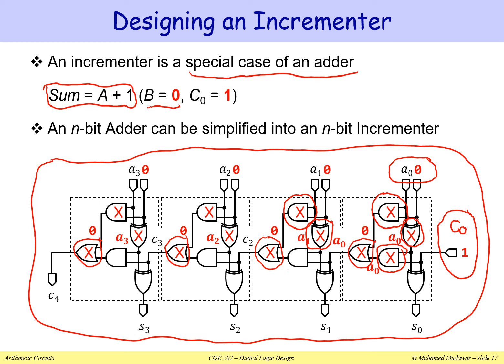Finally, let us look at this XOR gate that produces the output S0. This XOR gate is going to XOR A0 with one. When you XOR A0 with one, you get the complement of A0, which is A0 prime. So do we need an XOR gate to produce this output? In fact, we only need an inverter. This gate can also be simplified — we cannot eliminate it completely, but we can simplify it to become an inverter.